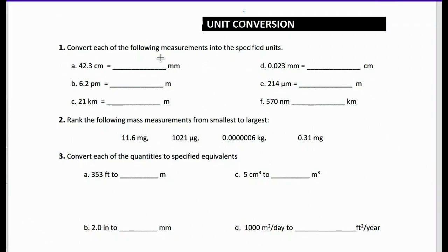Let's take a look at some more unit conversions. We have 42.3 centimeters into millimeters. This is one of those exercises where it's really good to look at our unit conversion cheat sheet, which should be on Schoology. One centimeter is equivalent to 10 millimeters, so all we're going to do is multiply this number by 10. We get 423 millimeters.